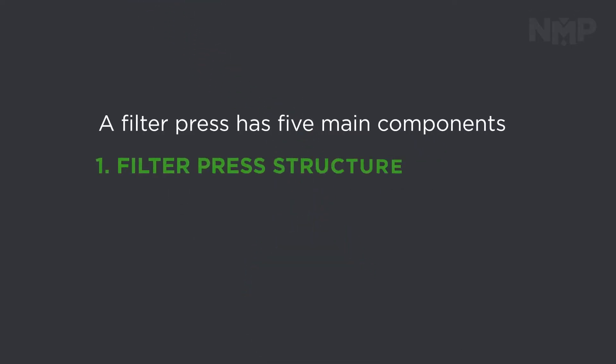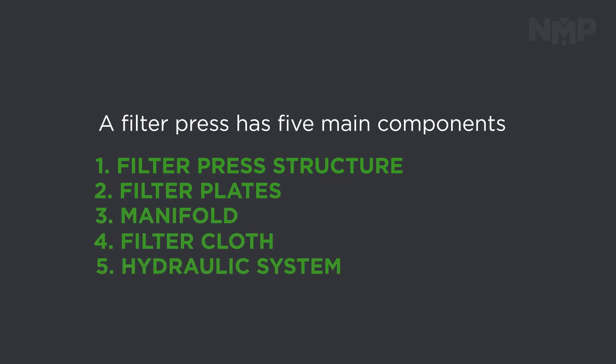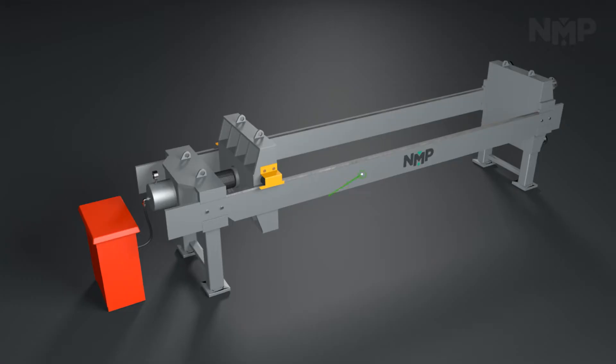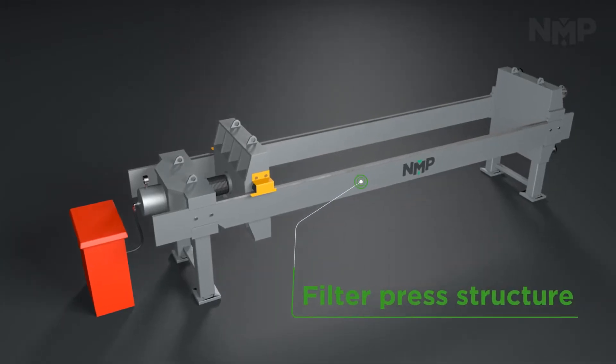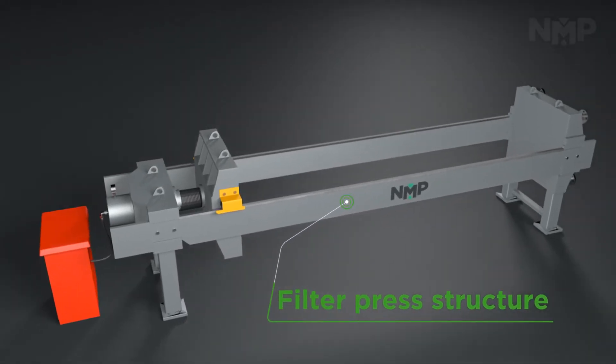A filter press has five main components. The steel frame acts as a clamping device for the filter plates.